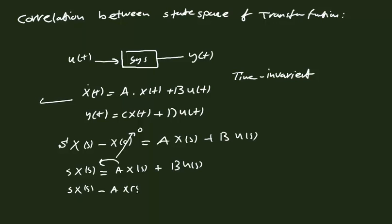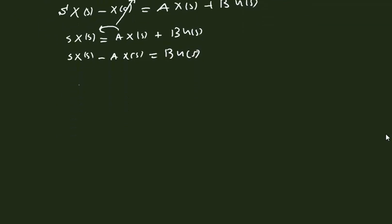Taking A·X(s) to the left-hand side gives: s·X(s) minus A·X(s) equal to B·U(s). Factoring out X(s), we get: (sI minus A)·X(s) equal to B·U(s), where I is the identity matrix.